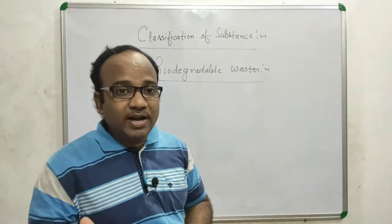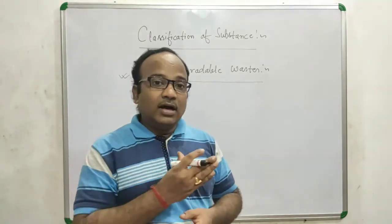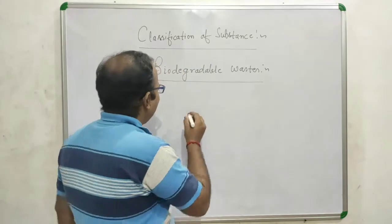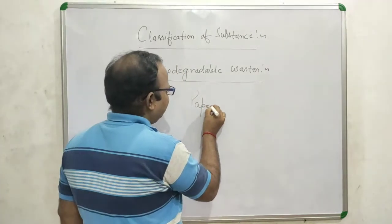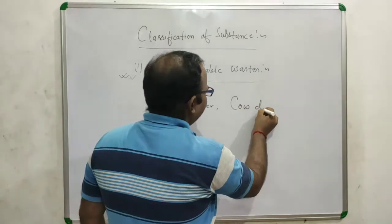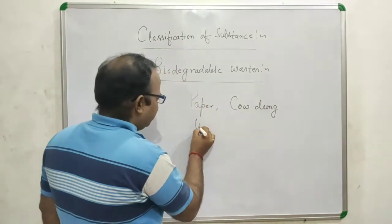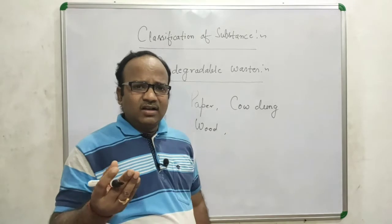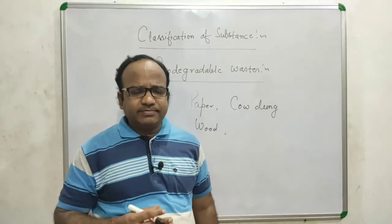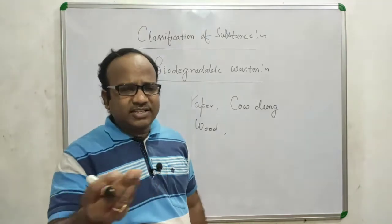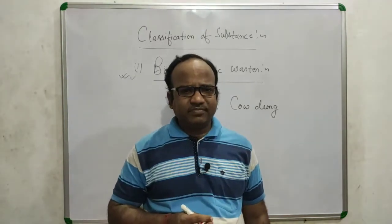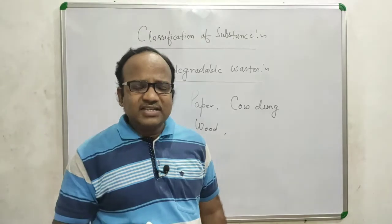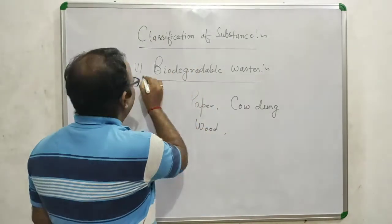The things that come to mind as biodegradable wastes — which are decomposed or broken down into simpler, non-poisonous forms — include paper, cow dung, wood, cow urine, different wood pulps, peels of vegetables, and various domestic wastes. All of these are broken down into simpler substances and come under biodegradable substances.